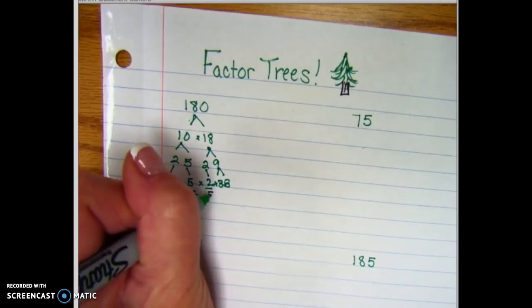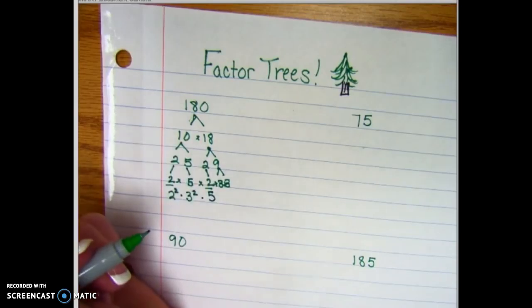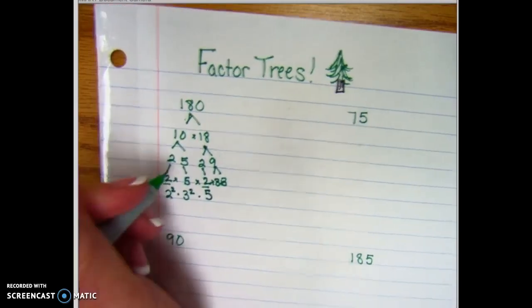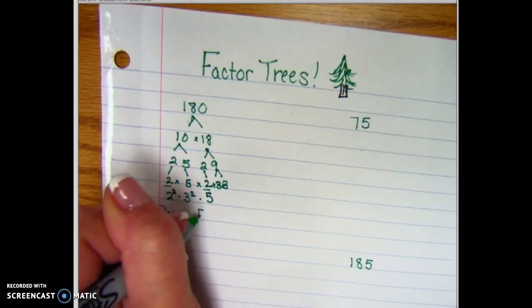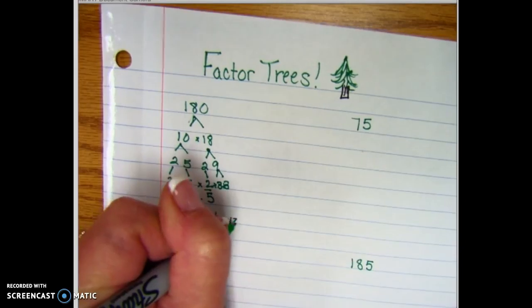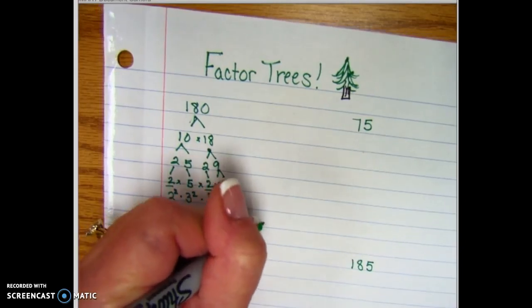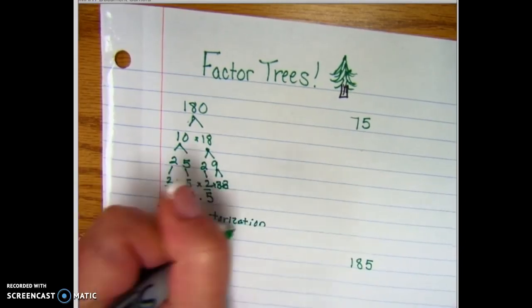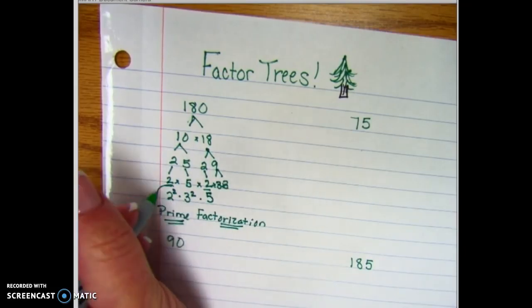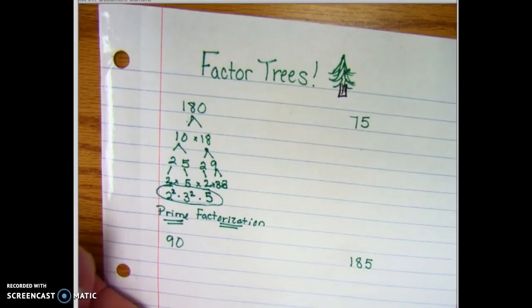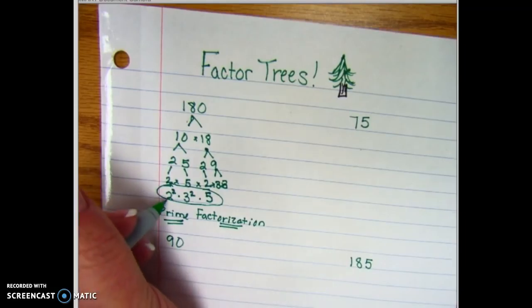So this is called the prime factorization. That is taking any number and making it into factors that are only prime numbers. So there is what you would have on your test - they need to go in order from least to greatest.